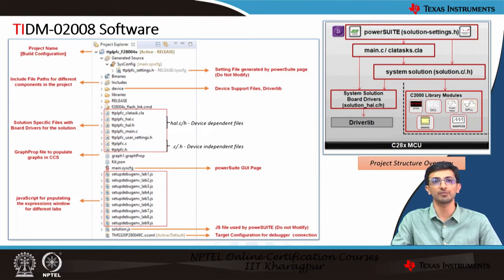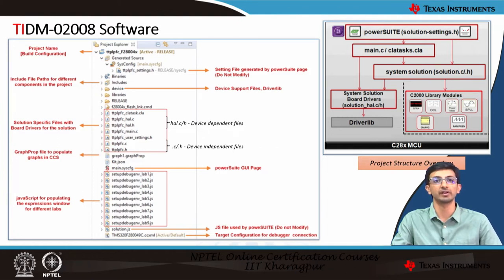There is a file called graph properties — graph one dot graph prop — which is used to populate graphs in the CCS window. Then there is the main dot sys config file, which is the power suite GUI page where you can update all other options. There are many available lab experiments for this design: you can operate in open loop, closed loop, PFC mode, or inverter mode. You can select any one of the labs you want to use.